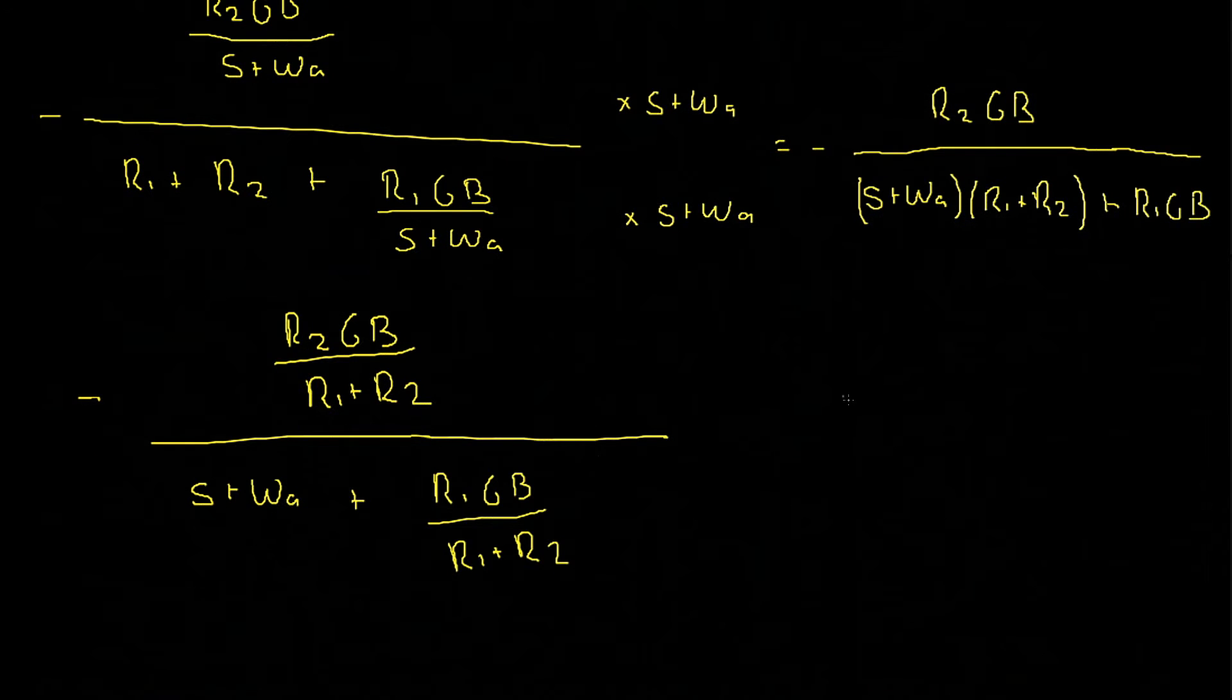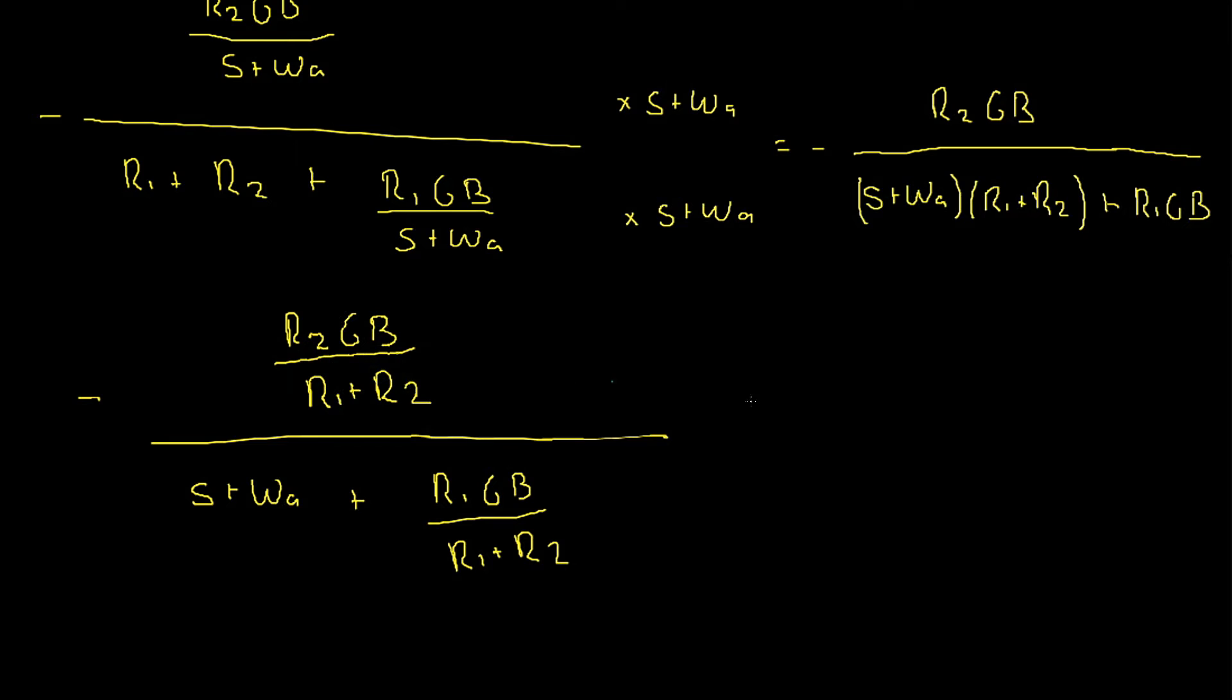Since we need a negative k at the front, why don't we do that now and then just modify this top term to reflect that. Therefore, we would have negative r2 divided by r1. If we were to compensate this on our top equation, we'd have to divide through by r2 and multiply by r1. The r2 in our r2 gb term would cancel and then we would simply multiply by r1. Therefore, the top term becomes r1 gb divided by r1 plus r2, where the denominator is unchanged. Then on the bottom, since we've already handled the negative k term at the front, the bottom remains unchanged, which gives us s plus omega_a plus r1 gb divided by r1 plus r2.